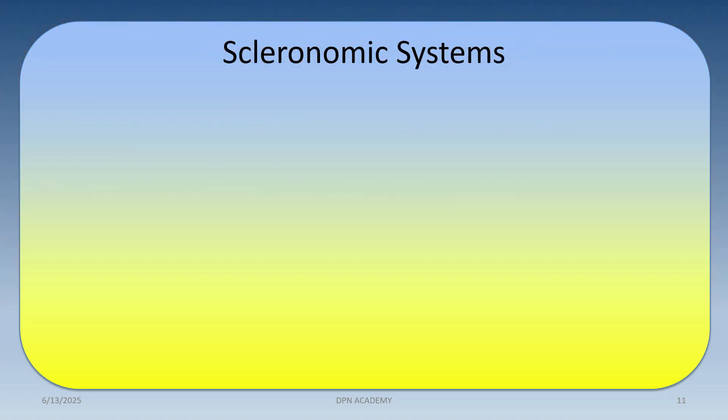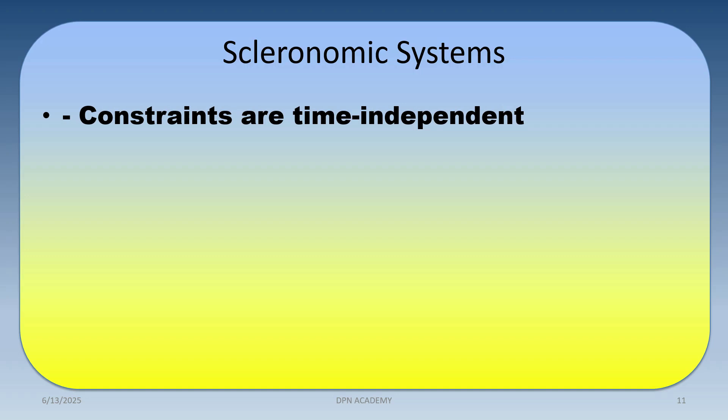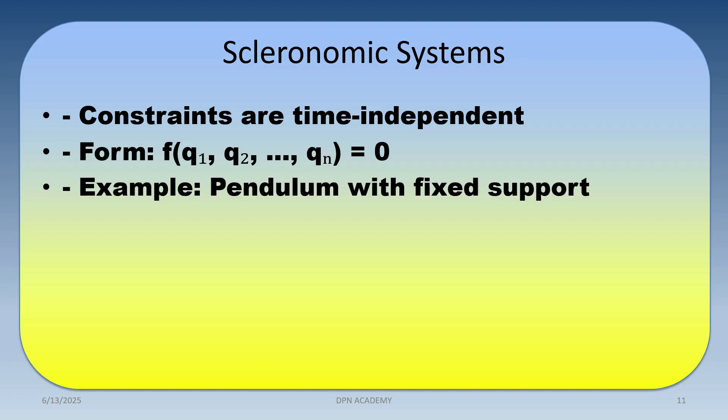Next is the scleronomic system, where constraints are time independent — this is the key point and is repeatedly asked in exams. The constraint form is F(q₁, q₂, ..., qₙ) = 0, with no explicit time dependence. An example is a pendulum with a fixed support.